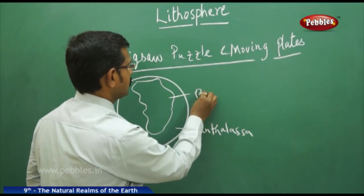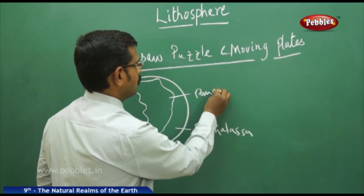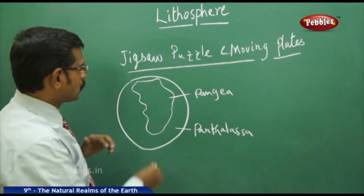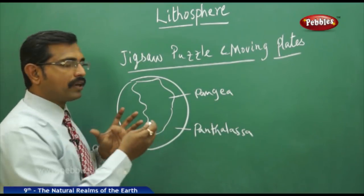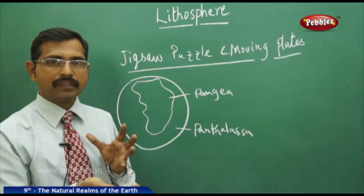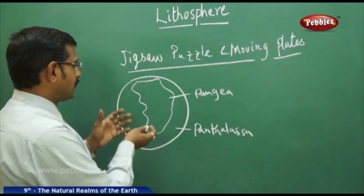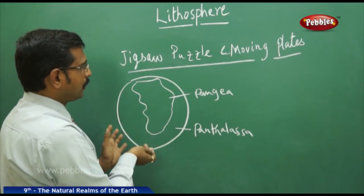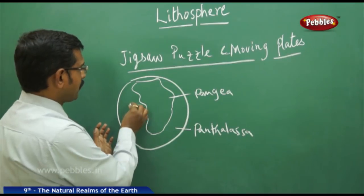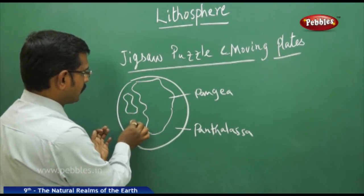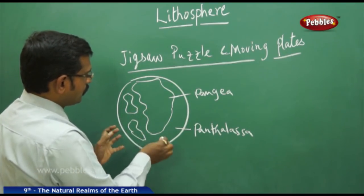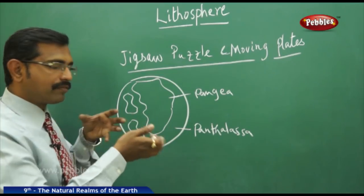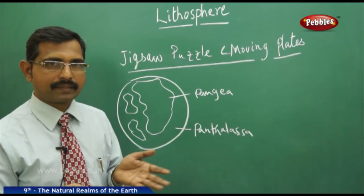Pangaea was the only whole land. Later, due to drifting and many other geological activities, it drifted and became pieces of land. Now you see these same pieces lying here and there — some billions of years ago they drifted as moving plates.